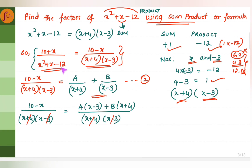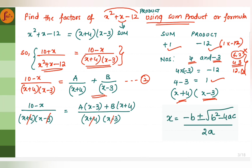To split it into factors, we can use the sum-product method or the quadratic formula method, which is minus b plus or minus the square root of b squared minus 4ac, all over 2a. In this video, I will go through the sum-product method.